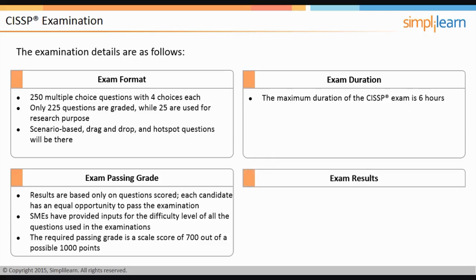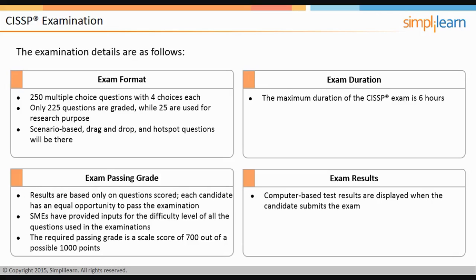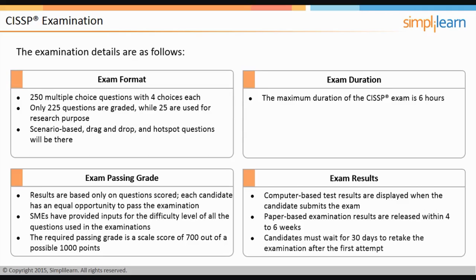Computer-based test, or CBT, results are displayed when the candidate submits the exam. For paper-based exams, results are released via email within four to six weeks. To retake the exam, candidates must wait 30 days after the first attempt, 90 days after the second attempt, and 180 days after the third attempt, after which the cycle repeats.